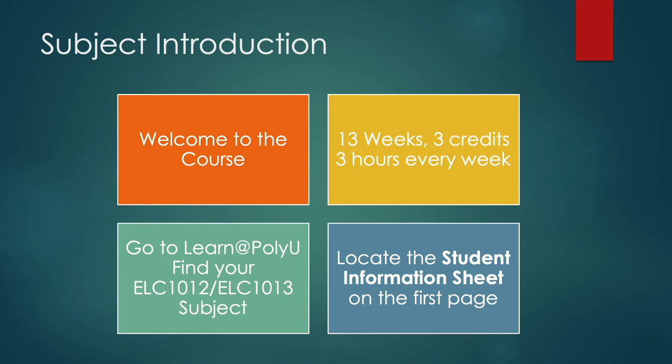Can you go to Blackboard Learn at PolyU? Find your English for University Studies subject. Its code is ELC1012 or ELC1013 and locate the student information sheet on the first page. I'm going to be talking about this information sheet, so it's important that you have it in front of you so you can follow what I'm saying. Pause the video now to find the information sheet.